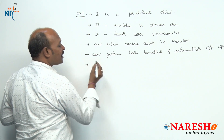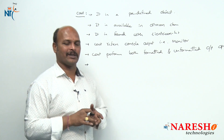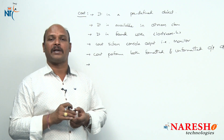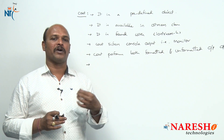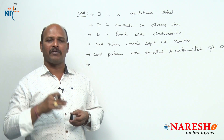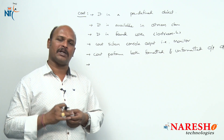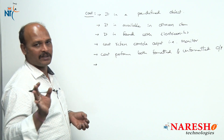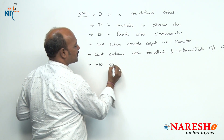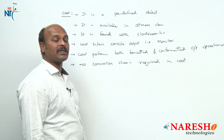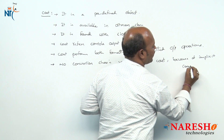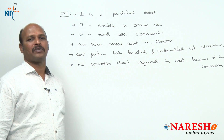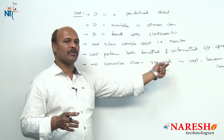Cout does not require any conversion characters — this is an important feature in C++. In printf, we use %d for integer, %f for float, and %s for string printing. But with cout, no conversion characters are required because implicit conversion is performed internally.